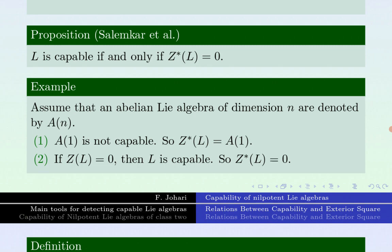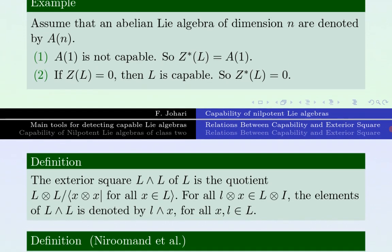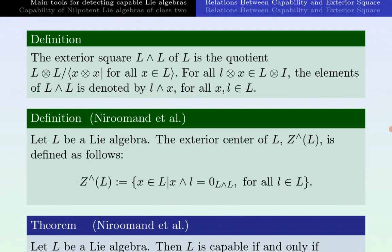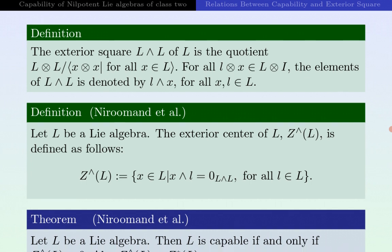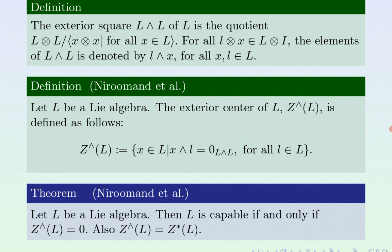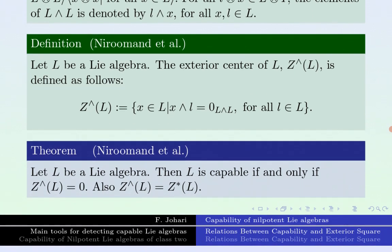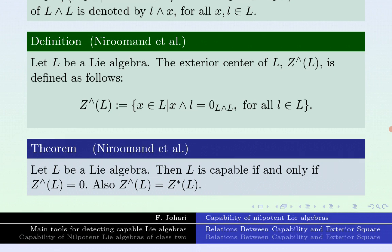The definition of the exterior square of L is a quotient of the non-abelian tensor product of L. Another definition useful for detecting capability is the exterior center. The exterior center is related to the exterior square of L. It is shown that L is capable if and only if the exterior center of L is zero. Therefore, the exterior center of L is equal to the epicenter of L.